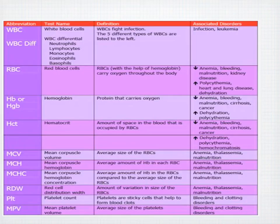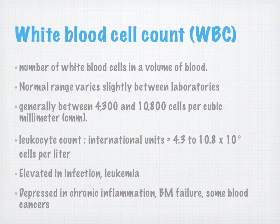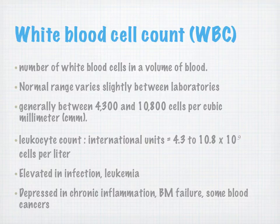Here's a cartoon slide summarizing CBC values, what they mean, and their associated disorders. White blood cell count is the number of white blood cells in a volume of blood. Normal ranges vary slightly between laboratories. White blood cells are elevated in infection and leukemia, and depressed in chronic inflammation, bone marrow failure, and some blood cancers.